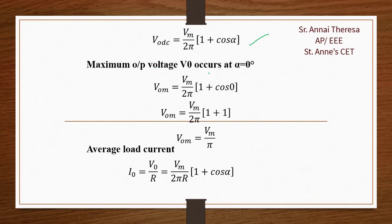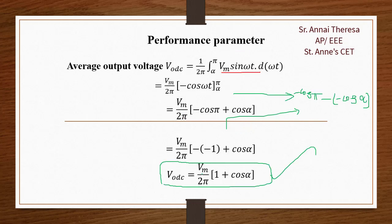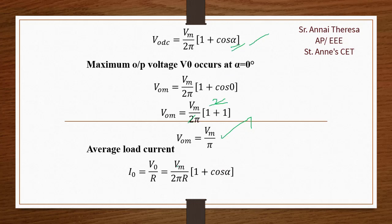The maximum output voltage V0_max occurs when alpha = 0°. Substituting cos(0) = 1: V0_max = Vm/2π × (1+1) = Vm/2π × 2 = Vm/π. So the maximum output voltage is Vm/π. The average load current is I0_DC = V0_DC / R = [Vm / (2πR)] × (1 + cos α).